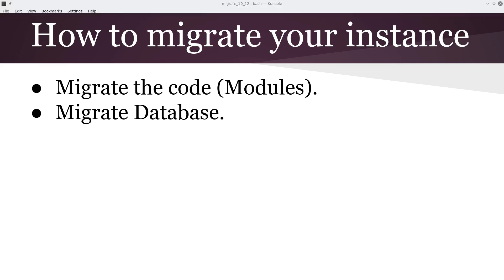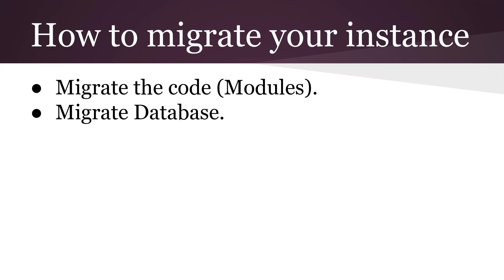How to migrate your instance: there are usually two main steps. For example, if you are running Odoo 8 and trying to move to Odoo 12, you will migrate the code — which is the business logic — and you will migrate the database. The database migration is typically done by importing and exporting data in CSV files, exporting from the old database and importing into the new one.